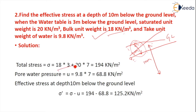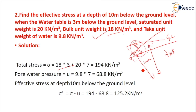The saturated unit weight applies below the water table, which is 10 minus 3 equals 7 meters. So total stress sigma = 18 × 3 + 20 × 7 = 54 + 140 = 194 kN per meter square.